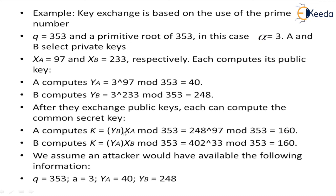After they exchange public keys, each can compute the common secret key. A computes k = y_B raised to x_A mod 353, that is 248 raised to 95 mod 353, which equals 160. B computes k = y_A raised to x_B mod 353, that is 40 raised to 233 mod 353, which also gives 160. So A and B arrive at the same shared key. An attacker would have available: q = 353, alpha = 3, y_A = 40, and y_B = 248.